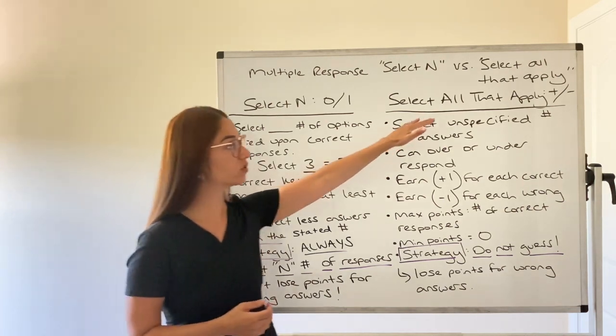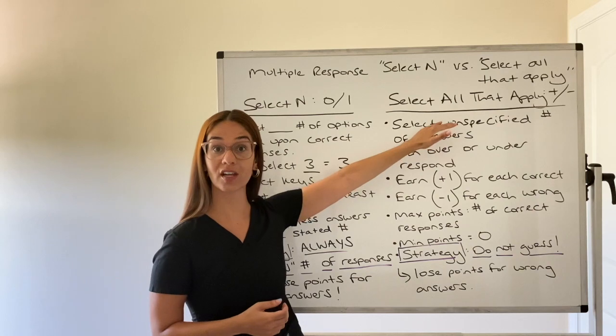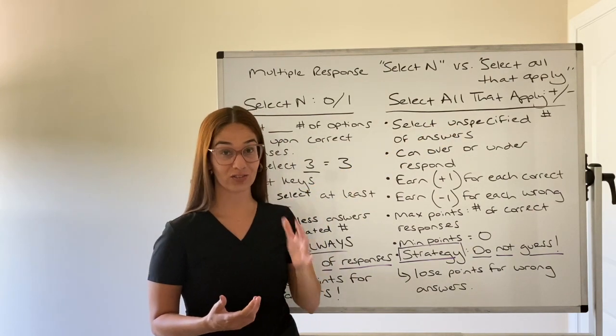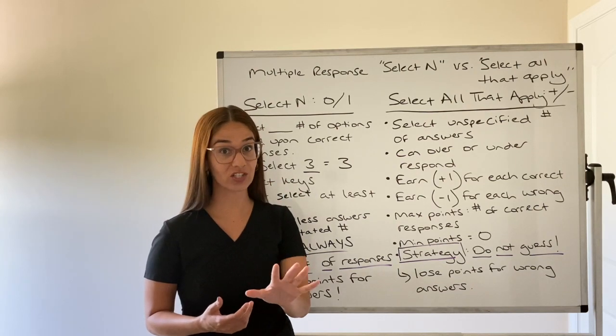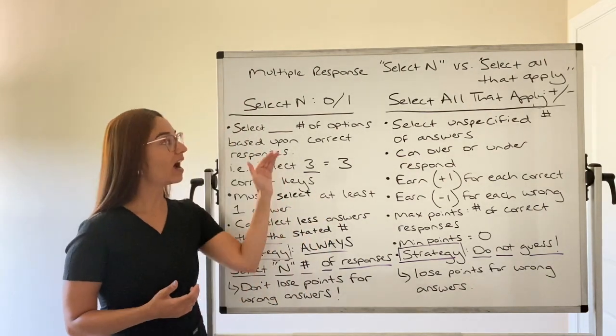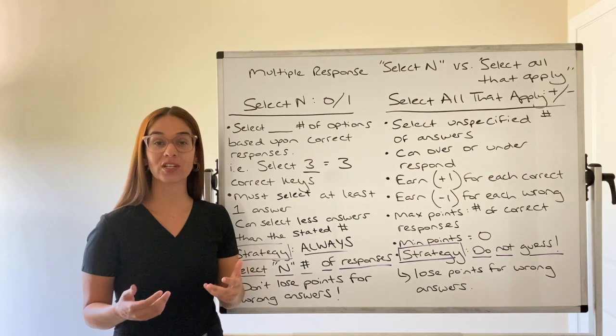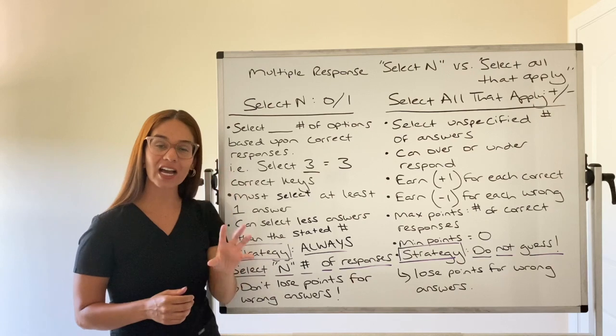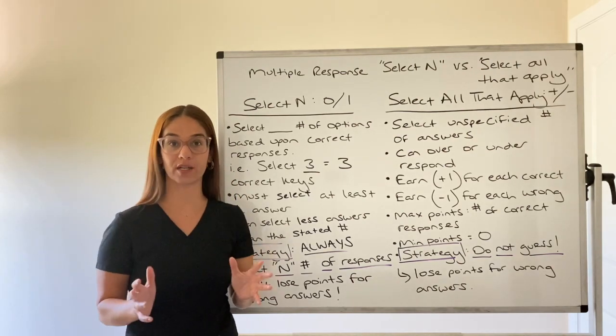With this scoring model for Select All That Apply, you lose a point for every incorrect answer. So you don't want to guess on those questions. However, I noticed when I was teaching my students that they were using that strategy for Select N, but they are actually different scoring models.